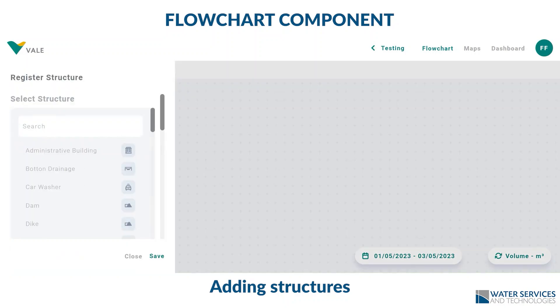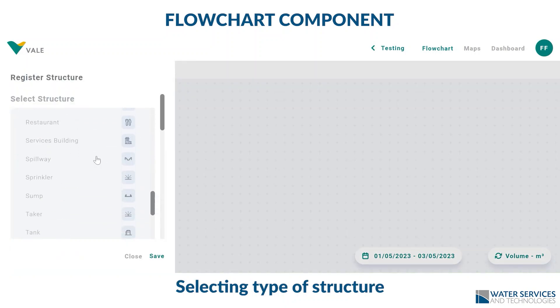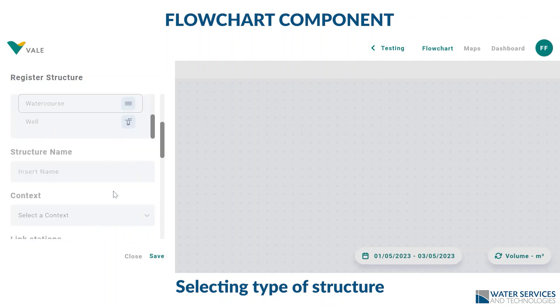In the Flowchart component, you can add and edit the operation's water circuit. First, you select what kind of structures you would like to add — dams, utilities, washers, etc.